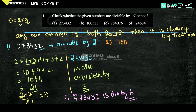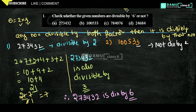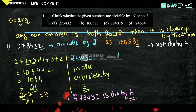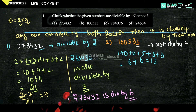Our next question is 100533. We check if it is divisible by 2. The unit digit is 3, which is odd, so it is not divisible by 2. Now we find the sum of digits: 1 + 0 + 0 + 5 + 3 + 3 = 12. 12 is divisible by 3.